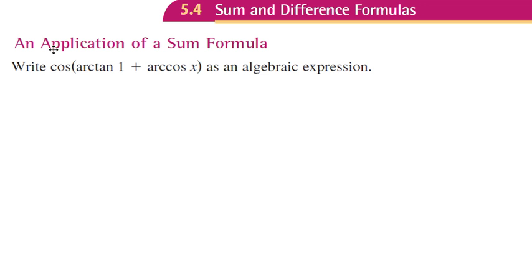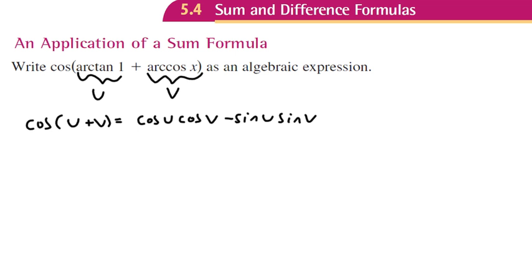Notice that this is in the form of our cosine sum formula. You can think of this as u and this as v. So we're doing cosine of u plus v, which equals cosine u times cosine v minus sine u times sine v. That's what we're doing, we'll be applying this sum formula.